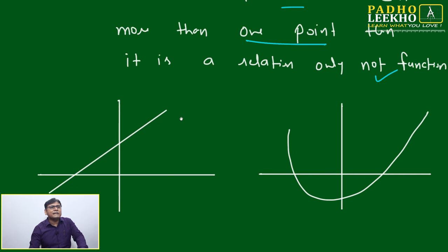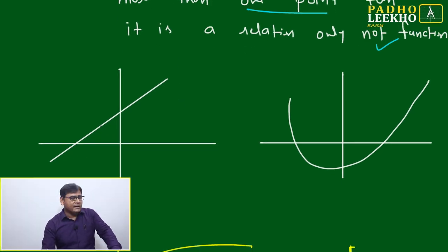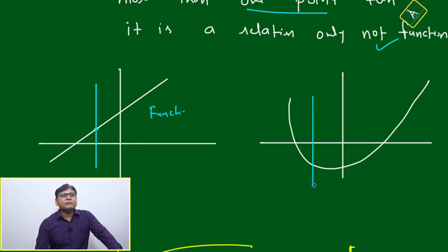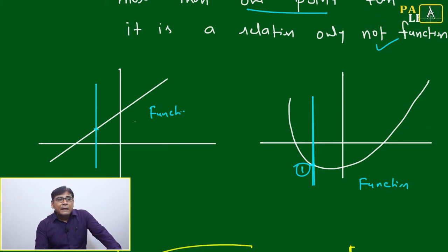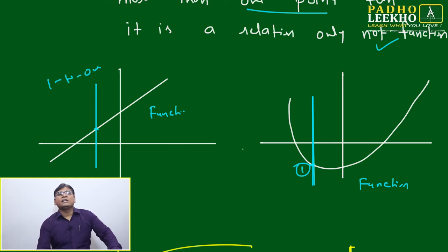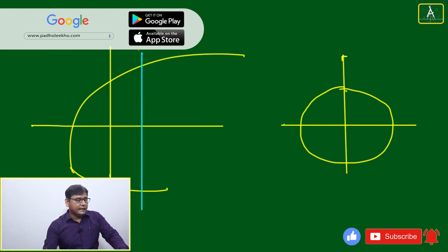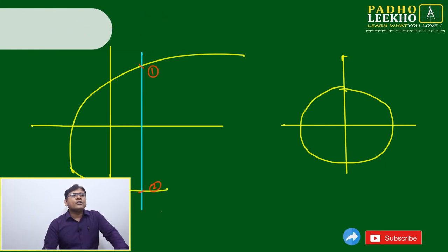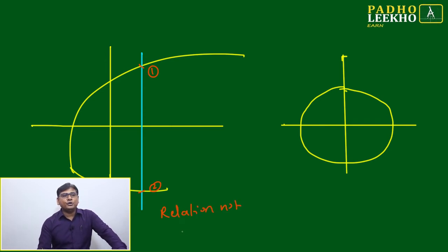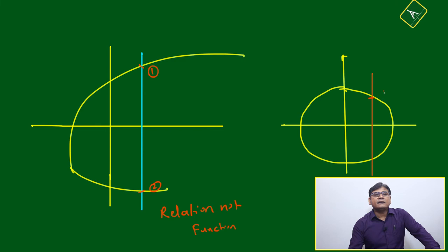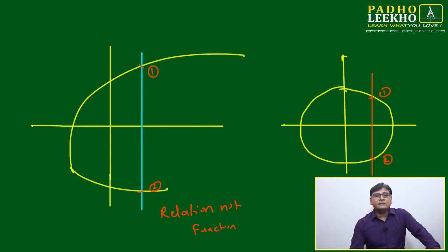For example, take a straight line — drawing a vertical line cuts it at only one place, so it is a function. If the horizontal line also cuts at only one place, it is a one-to-one function. If the horizontal line cuts at more than one place, it is many-to-one. For a circle or ellipse, the vertical line cuts at two points, so it is a relation but not a function.